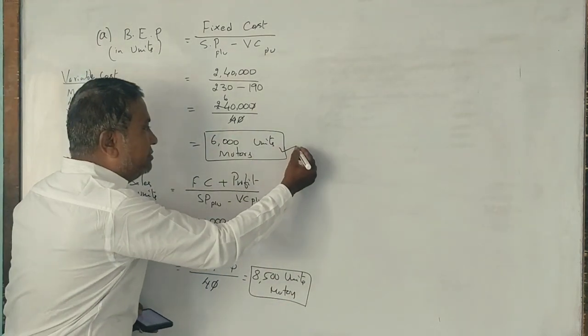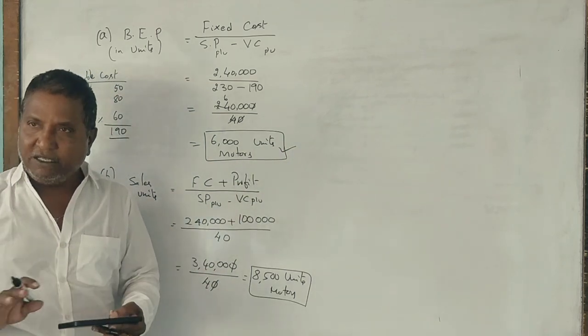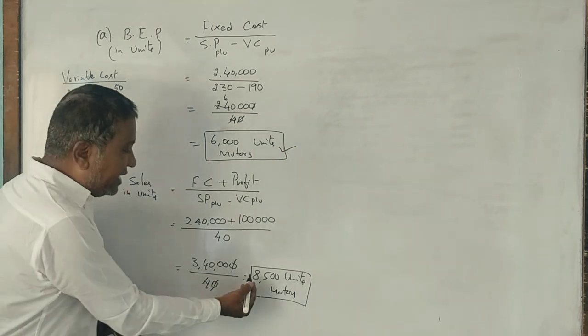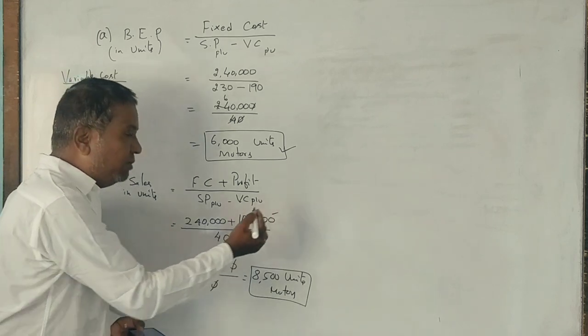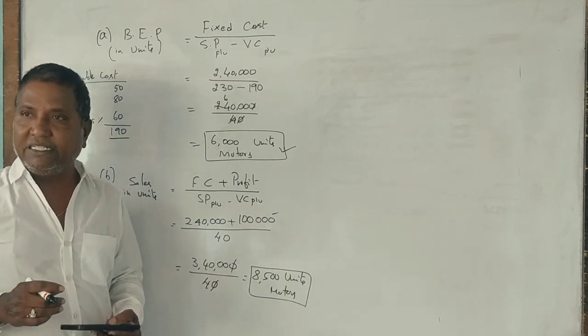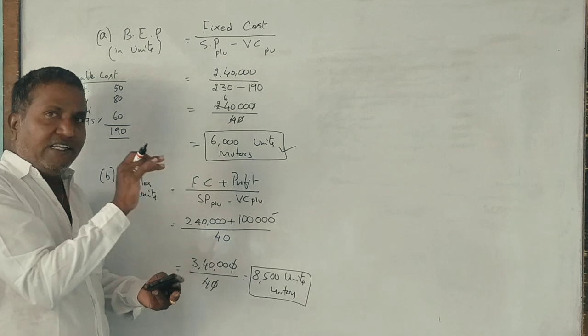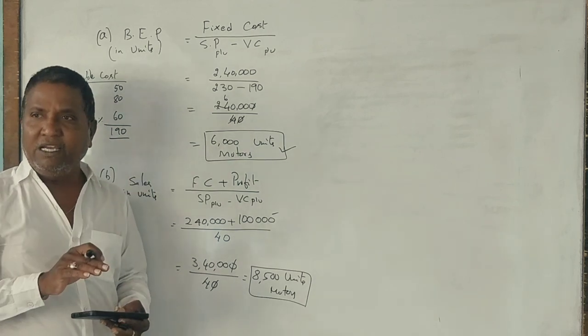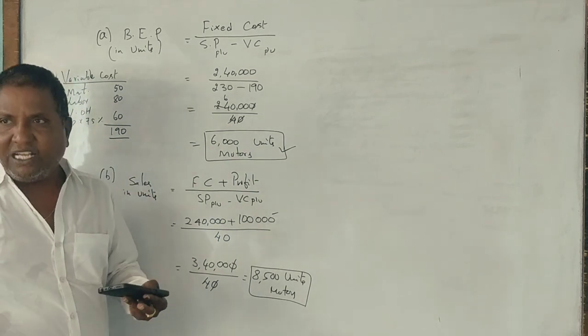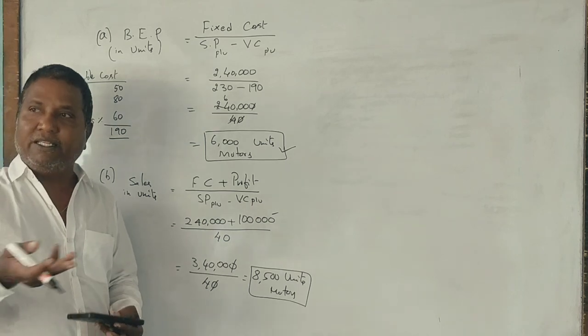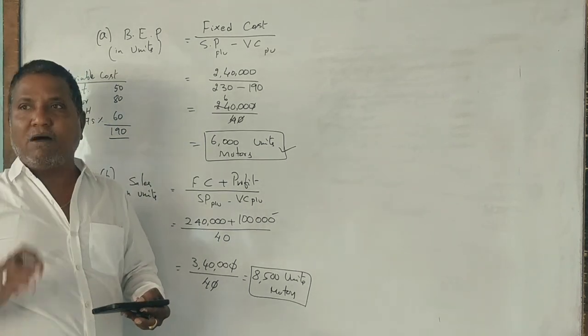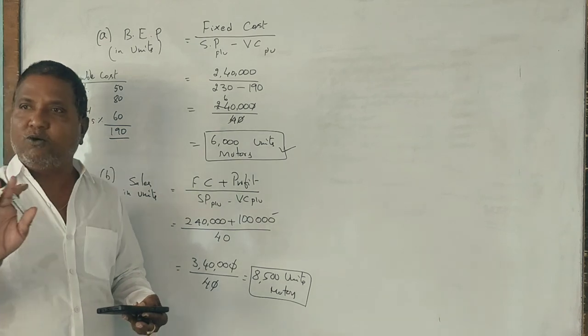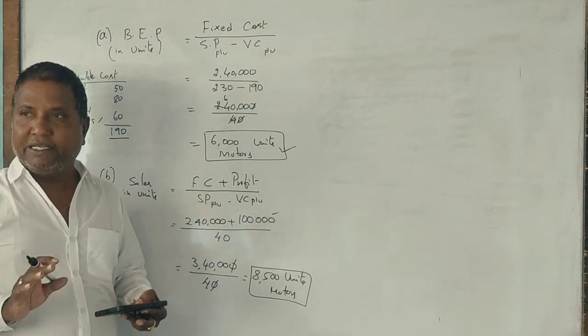8,500 units of motors need to be sold. 6,000 motors sold means no profit, no loss. 8,500 motors sold means one lakh rupees profit. If you sell less than 6,000 motors, you will have a loss. This is one question worth 2 marks, another 2 marks. Now the third question.